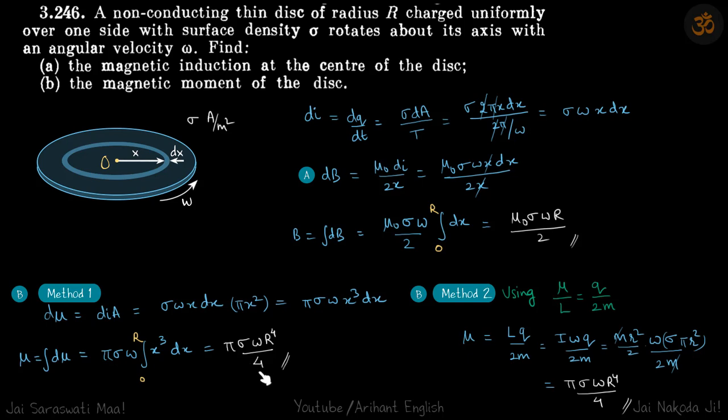This is one way to calculate magnetic moment. Another way is we know that the ratio of magnetic moment to angular momentum is q by 2m.